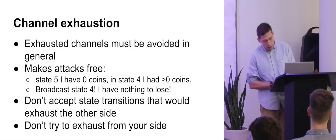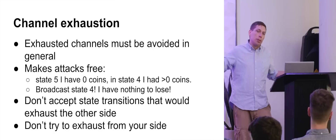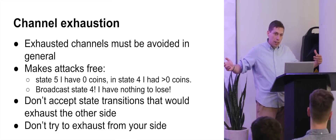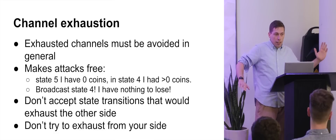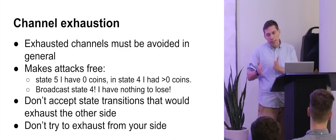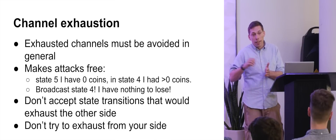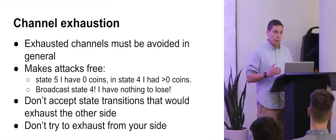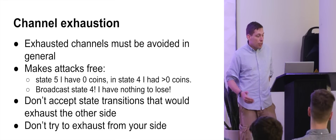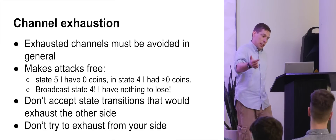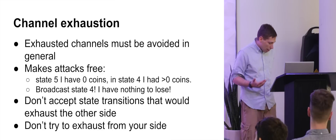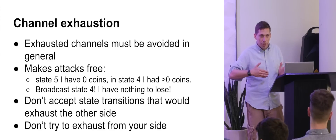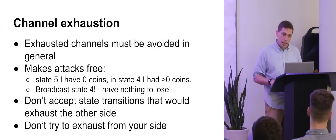There's one trick to be aware of: channel exhaustion. This is when a channel has all the money on one side. You want to avoid this because it's dangerous due to attacks. If Alice has no money in the channel and Bob has all of it, Alice could broadcast an old state where she had a Bitcoin — she has nothing to lose. So don't accept a state transition that will exhaust the other side, and don't try to exhaust from your side either. You always need a buffer within the channel. If you push all the money to one side, it becomes free for that person to try to close the channel the wrong way.